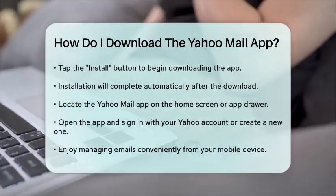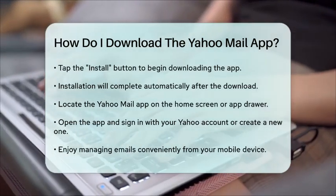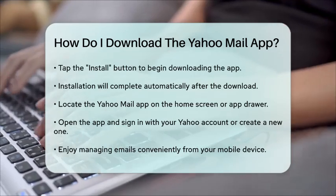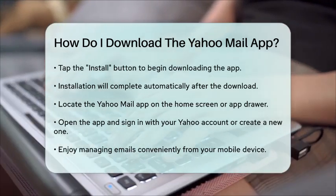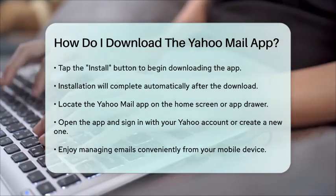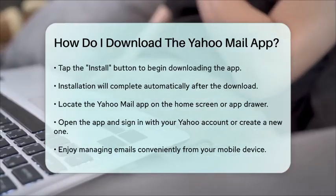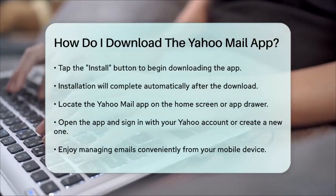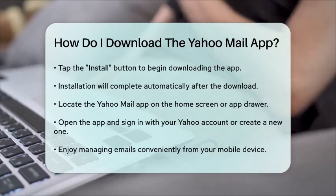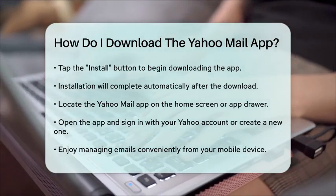After the installation is complete on either device, you can find the Yahoo Mail app on your home screen or in your app drawer. Tap on the app icon to open it, and you will be prompted to sign in with your Yahoo account or create a new one if you do not already have an account. Now you are ready to manage your emails directly from your mobile device with the Yahoo Mail app. Enjoy the convenience of accessing your messages anytime and anywhere.